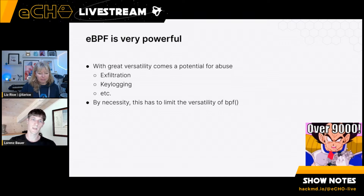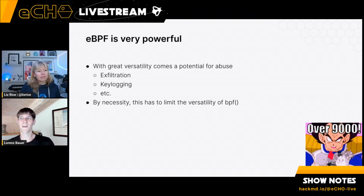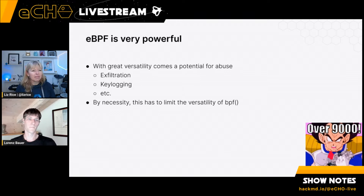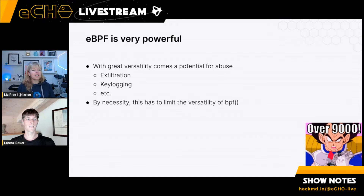The headline of the problem statement is that eBPF is very powerful — most people watching know what you can build with it. With that great power comes the potential for abuse. People have built key loggers, rootkits, all kinds of things. As a community working on eBPF, this is not something we should be happy about, and we should be thinking about how we can prevent these kinds of abuse. It's a completely valid concern that users and potential users have.